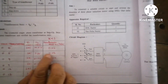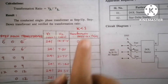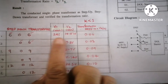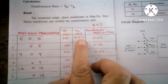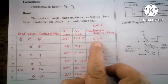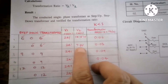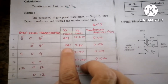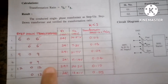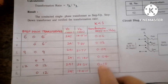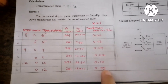For a step down transformer, the transformation ratio k is always less than 1. We calculate k = V2 / V1: for the 6-0-6 transformer, 14.54 divided by 241 gives approximately 0.06. Repeating the same steps for the 9-0-9 and 12-0-12 transformers, we get the respective readings of approximately 0.09, 0.04, 0.11, and 0.05 respectively.